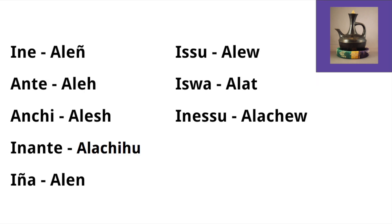Just to go over all the conjugations one more time: 'ene allin,' 'anta alah,' 'anchi alash,' 'ananta alachuhu,' 'inya allin,' 'asu alah,' 'asu alat,' 'anasu alachuhu.' So there you have it — here's our introduction to the verb 'to have' in Amharic: 'menor.'